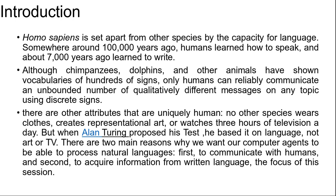There are over a trillion pages of information on the web, and almost all of it is in natural language. An agent that wants to do knowledge acquisition needs to understand the ambiguous, messy language that humans use. We examine the problem from the point of view of specific information-seeking tasks such as text classification, information retrieval, and information extraction. One common factor in addressing these tasks is the use of a language model — models that predict the probability distribution of language expressions.